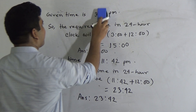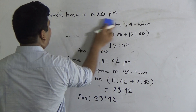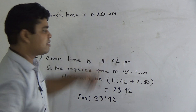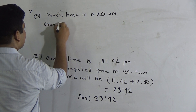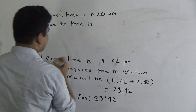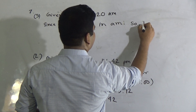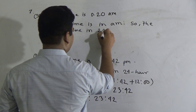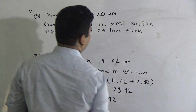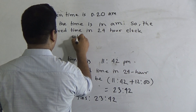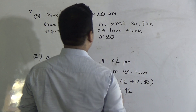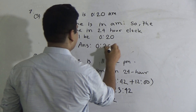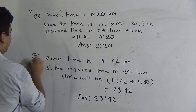Question 7, part 3: the given time is 0:20 AM. When the time is given in AM, it remains unchanged. Since the time is in AM, the required time in the 24-hour clock will be 0:20, without AM or PM, because the 24-hour clock does not use AM or PM. So the answer is 0:20.